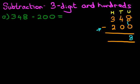Now we do the tens. What is four minus zero? The answer is four. And lastly, we're going to do the hundreds column. What is three minus two? The answer is one.